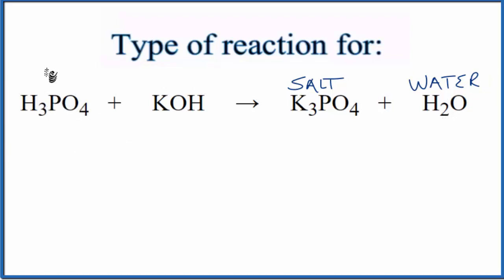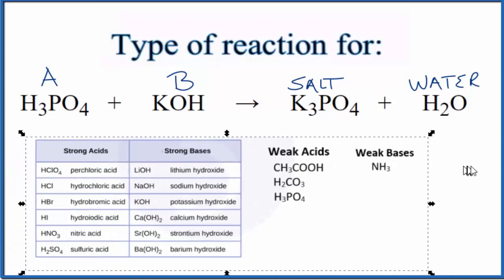If I look at the reactants, phosphoric acid—probably one you should memorize—that's an acid. And KOH, I have a metal with an OH, so this is a hydroxide group bonded to a metal, that's a base. Acid plus base gives you salt and water—that's neutralization. It's a good idea to memorize some of the common acids and bases, and this table here will help.